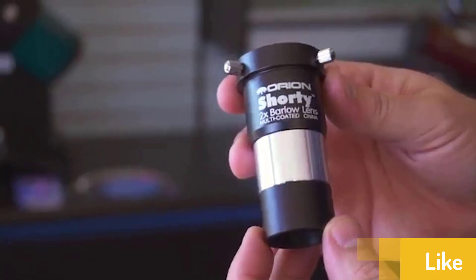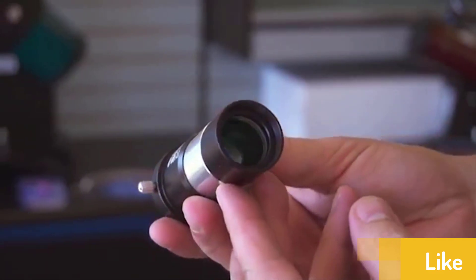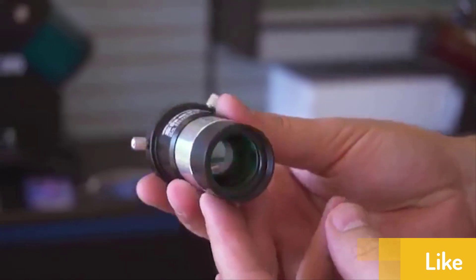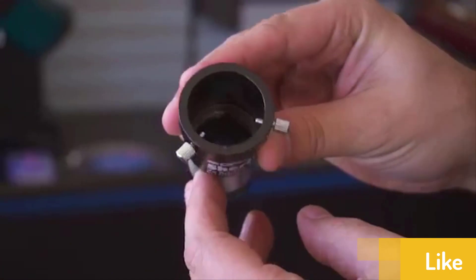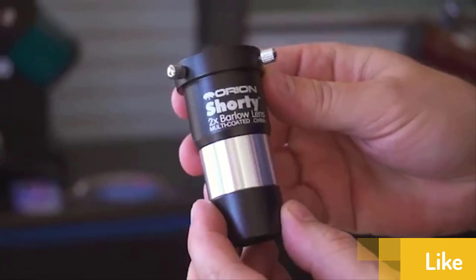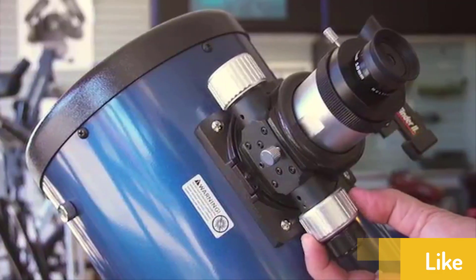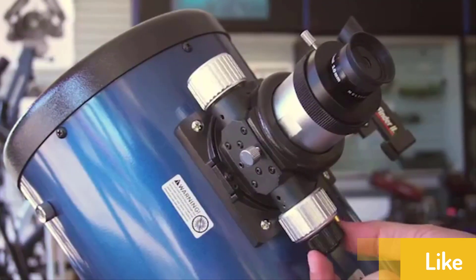The Orion SkyQuest is easy to collimate with an adjustable secondary mirror that uses a thumbscrew to adjust. This is an excellent telescope for someone who doesn't try to look into deep space. It doesn't have enough zoom for that and would need a better aperture for a clear image.